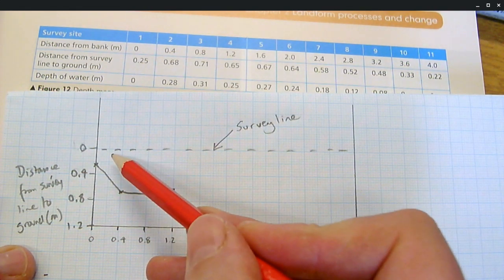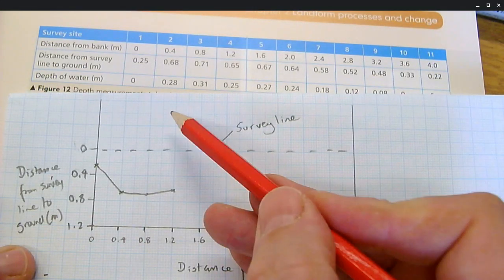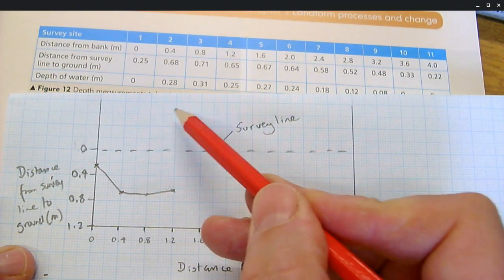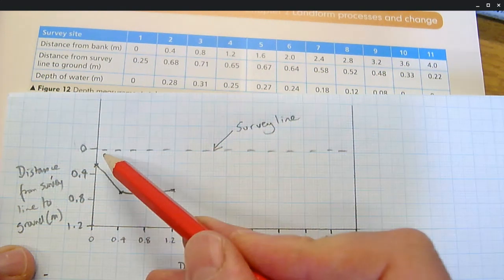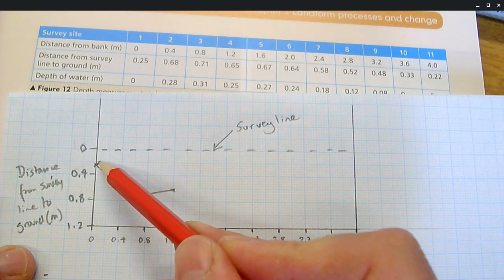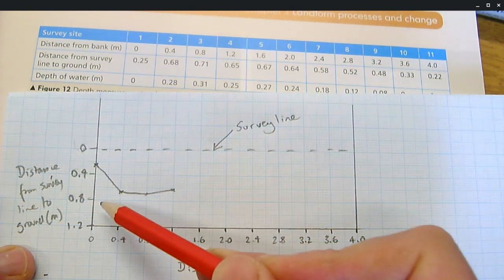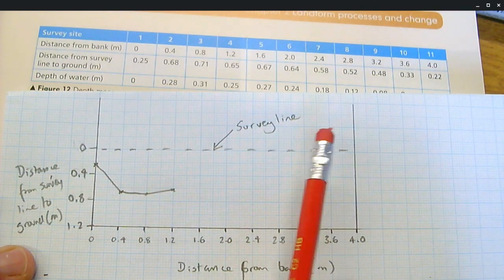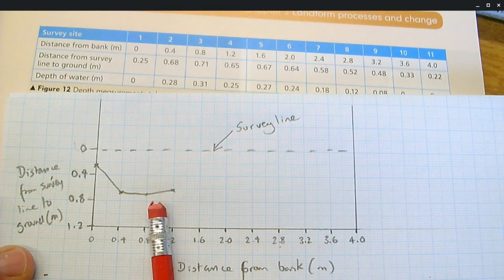And when you've completed it, good practice. Obviously, you need a title at the top. So we have a title at the top saying cross-section. And then you can actually colour in the area of the river, perhaps in blue to show where the river is, maybe brown to show the riverbed. Thank you.